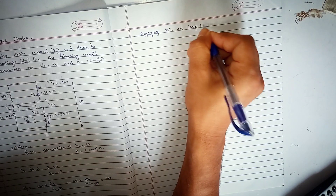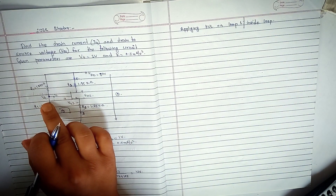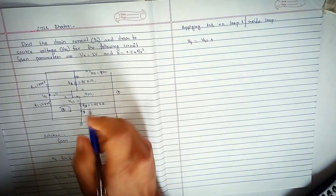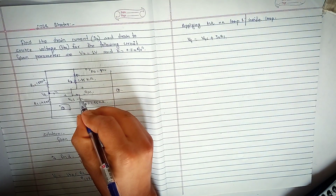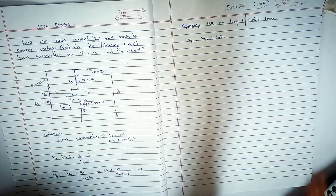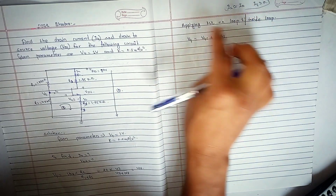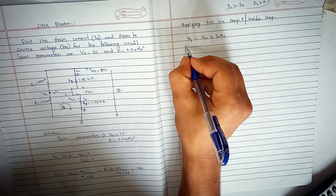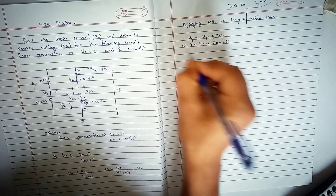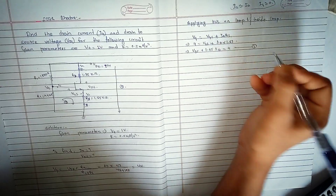Applying KVL on loop 1, the inner loop: VG equals VGS plus ID times RS. Since gate current is nearly zero, we get the equation: VGS plus 1.65 times ID equals 4. This is equation 1.